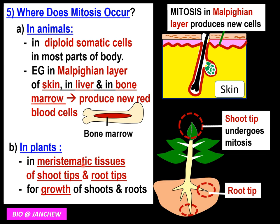Apart from meristematic tissue in the shoot tip and root tip, the cambium in the stem can also carry out mitosis to cause the stem to increase in diameter through the production of new cells.